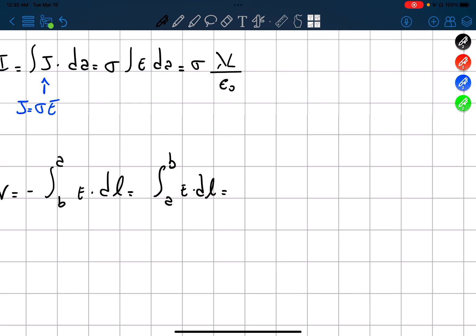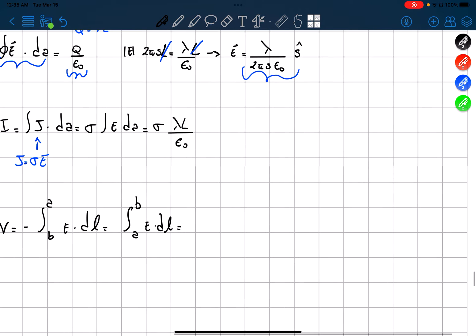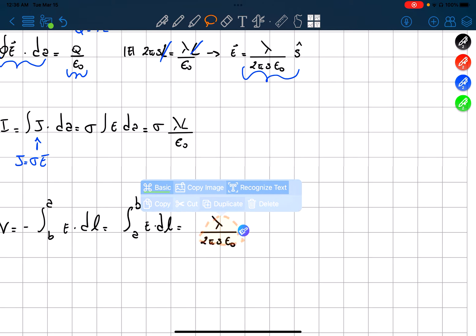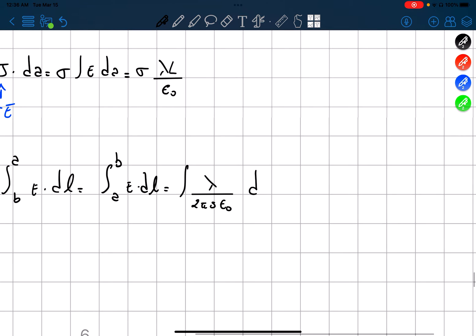That is equal to what? We take E that we already found before, which is equal to this part over here. So I'm just copying and pasting into all this times dL, which is going to be Ds in our case because we're moving along the radius of the cylinder from A to B.